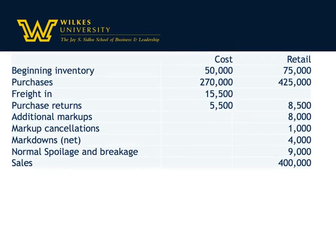You're going to start with all the information listed here in two categories — one for the cost and one for the retail amount. We have things we've talked about before: purchases, freight in, and purchase returns, all combined to become net purchases.